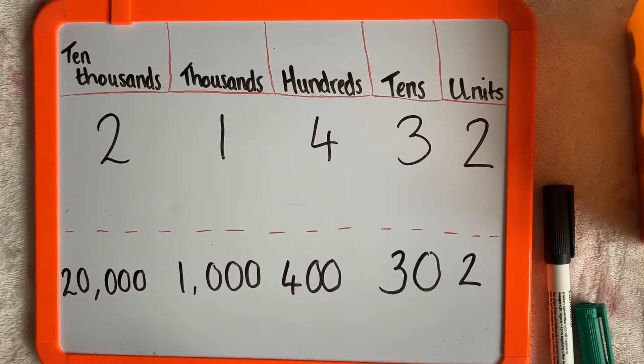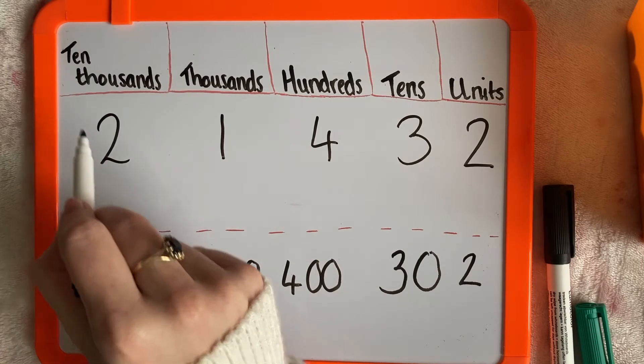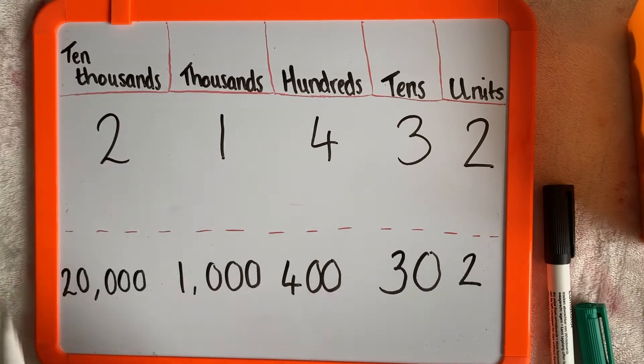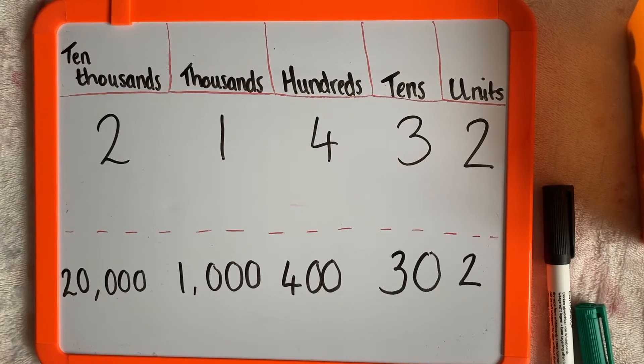This is because there are two lots of ten thousands, and two times ten thousand is 20,000.